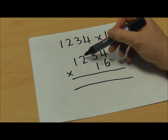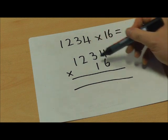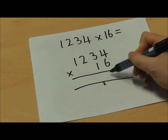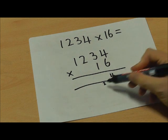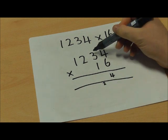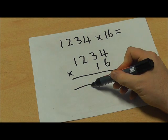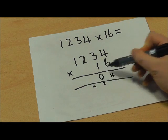So 4 times 6 is 24, so I've written my 24 like that. 3 times 6 is 18, plus the 2 is 20, and I'm being careful to make sure I line up my answers in the correct place value columns.